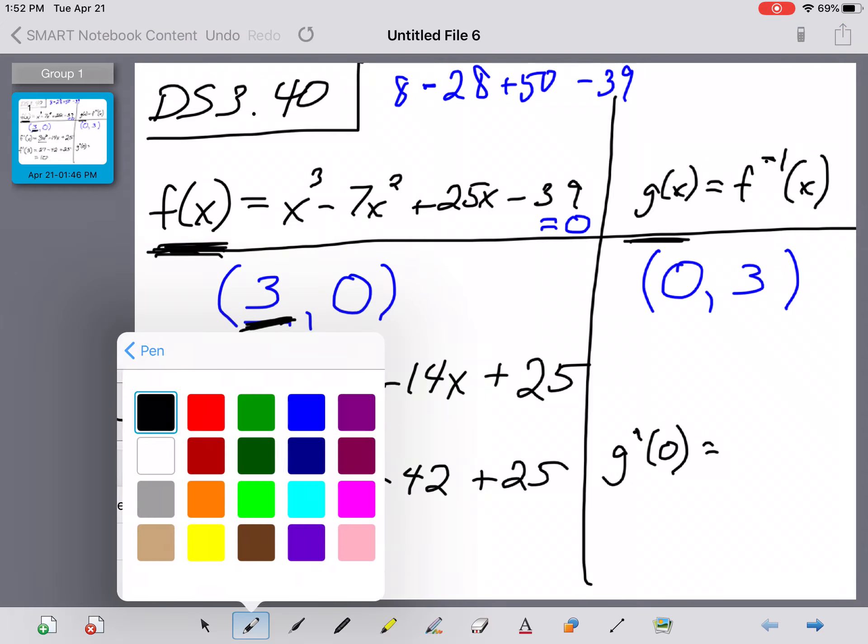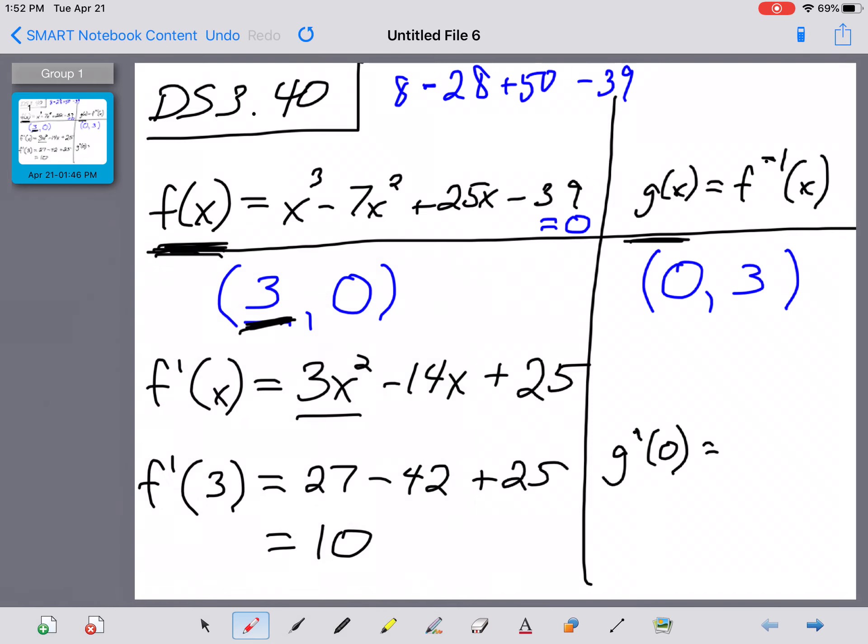And here's the big takeaway. If the value of the derivative of f evaluated at the point 3, 0 is 10, then the value of its inverse's derivative at its sister point, the spot here where x is equal to 0, is always going to be the reciprocal of this value, which is going to be 1 tenth.